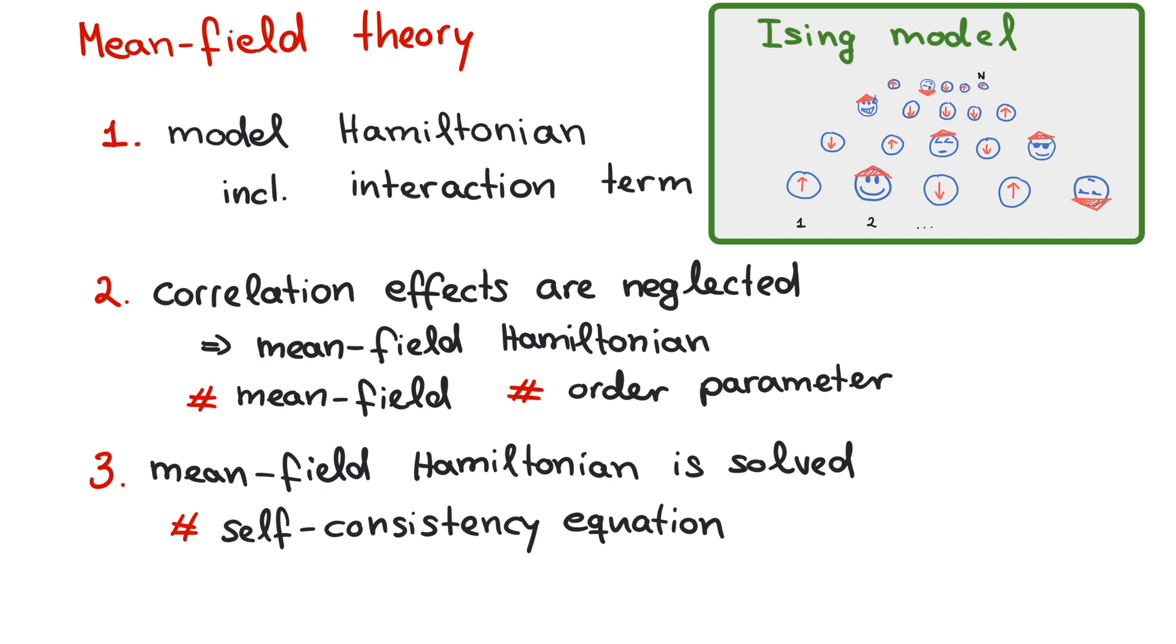We have introduced the Ising model from a bird's eye point of view in a previous video. The model describes N sites with two possible states that couple to their neighbors. We can, for instance, consider spins pointing up or down coupling to a magnetic field in Z-direction. The model Hamiltonian contains two terms.